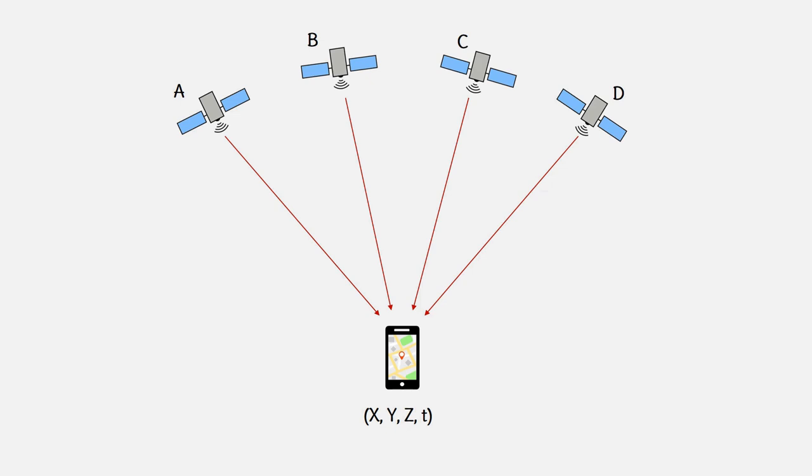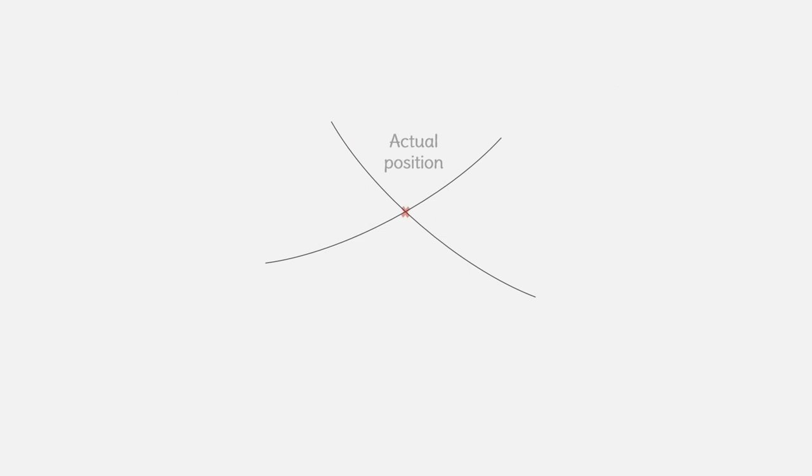There is one final remark that should be mentioned in this context. The measurements received from the satellite contain different sources of errors that if left uncorrected cause the position calculation to be inaccurate.